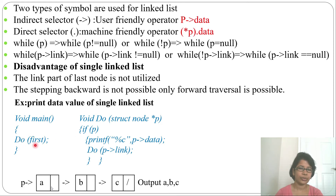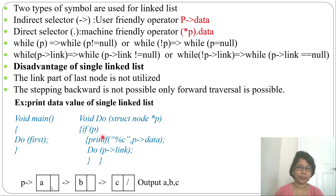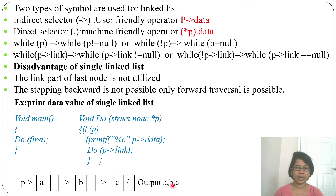Let's do an example — print data of a singly linked list. Function do(struct node *p): if p, print p->data, then call do(p->link). So it first checks if p is not null, prints A, then moves to p->link; prints B, then C. When link is null it stops. Output is A B C. This is a tail recursion because the recursive function call is at the last line.